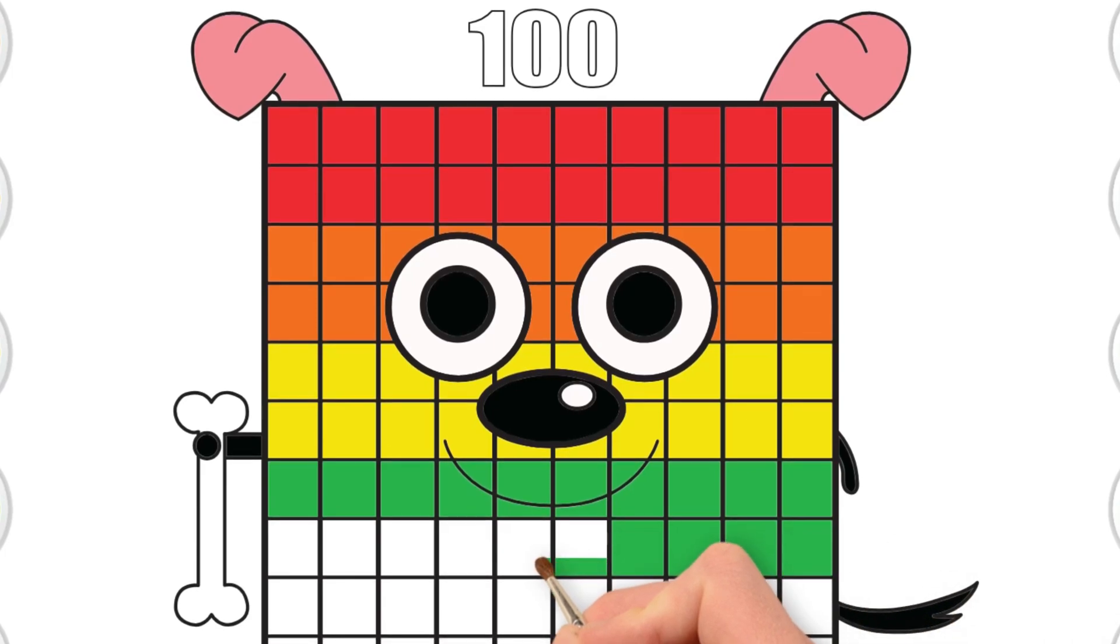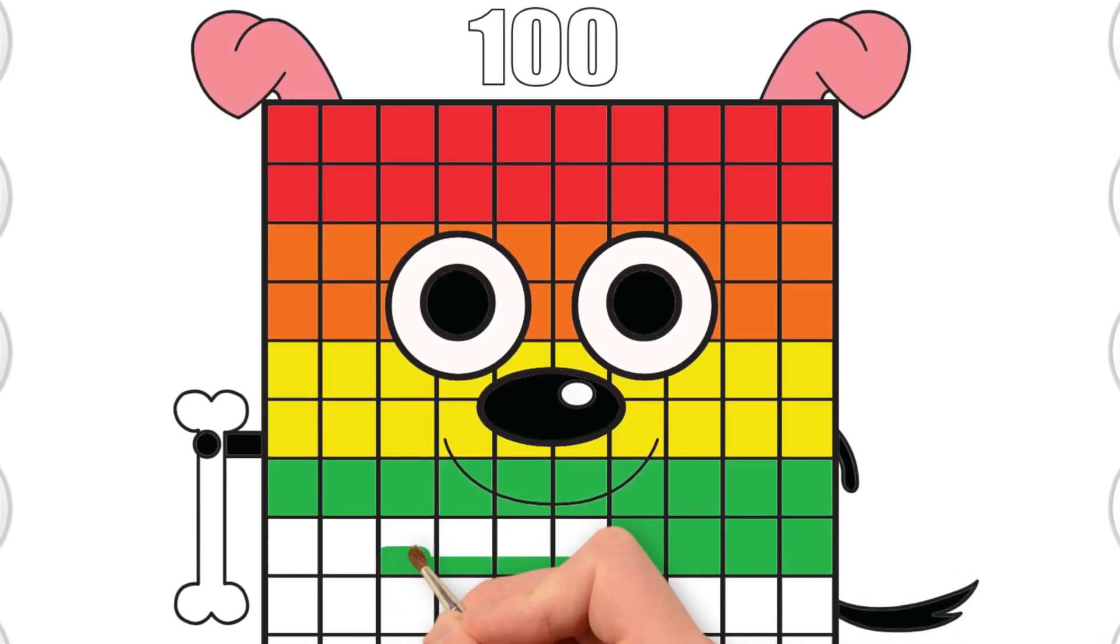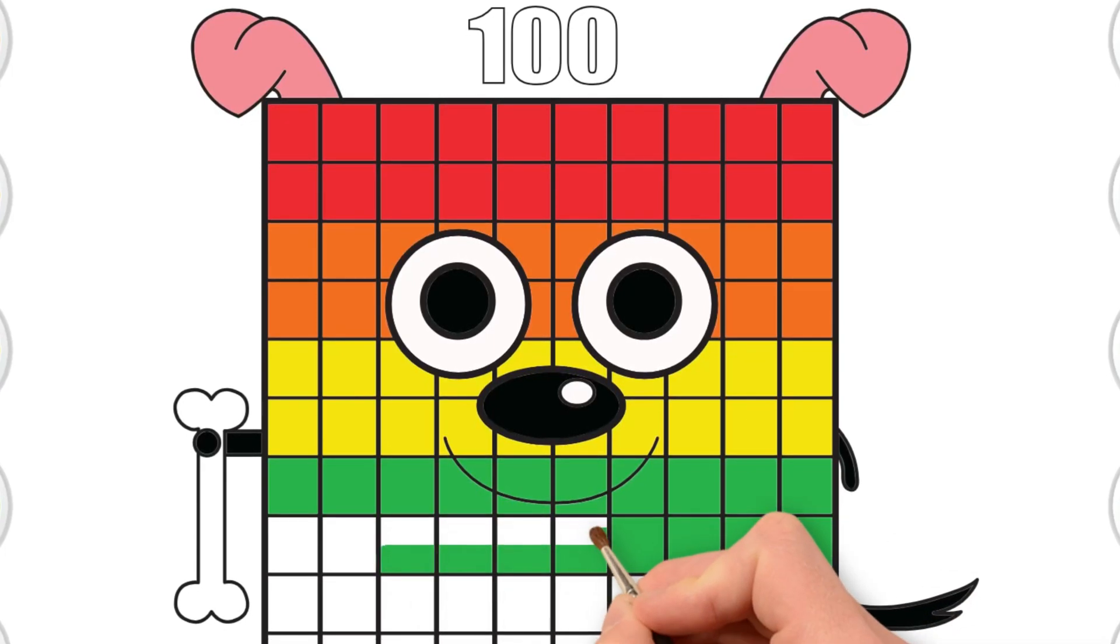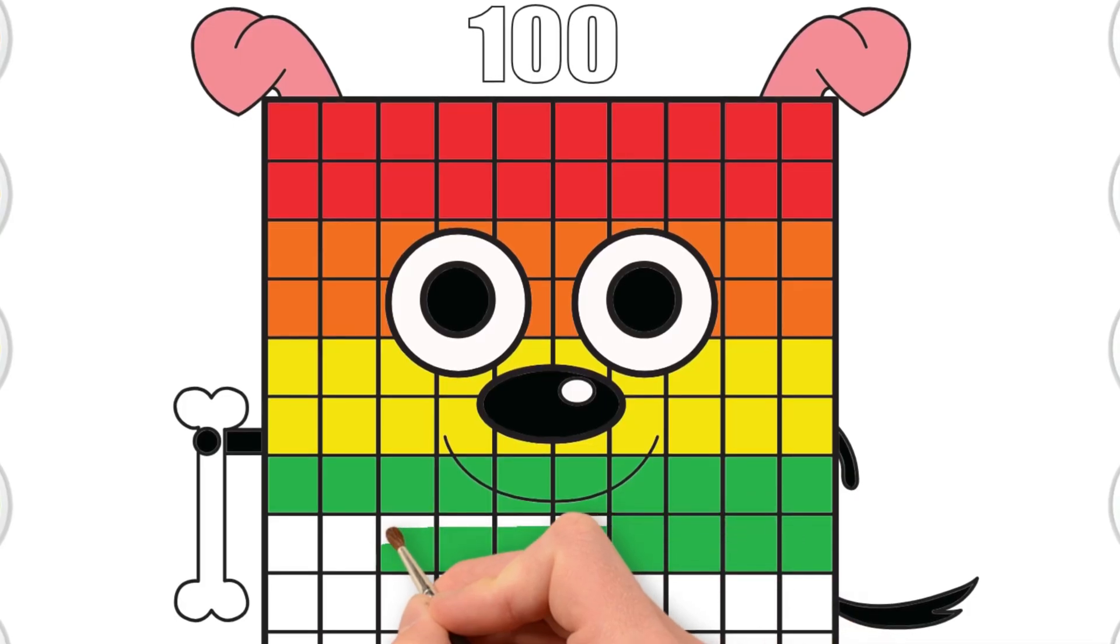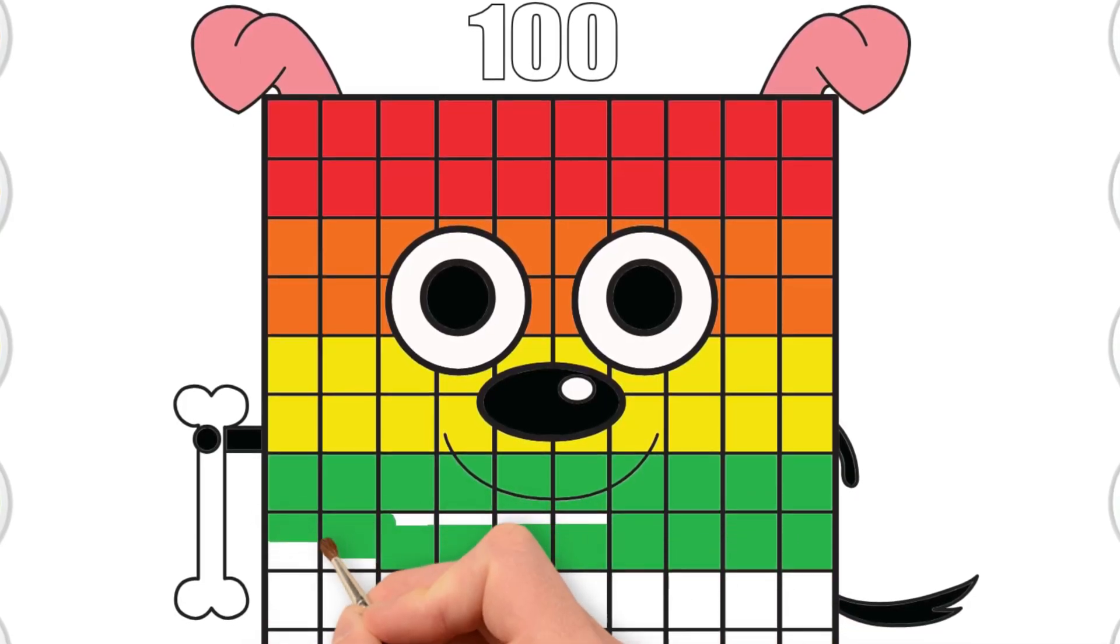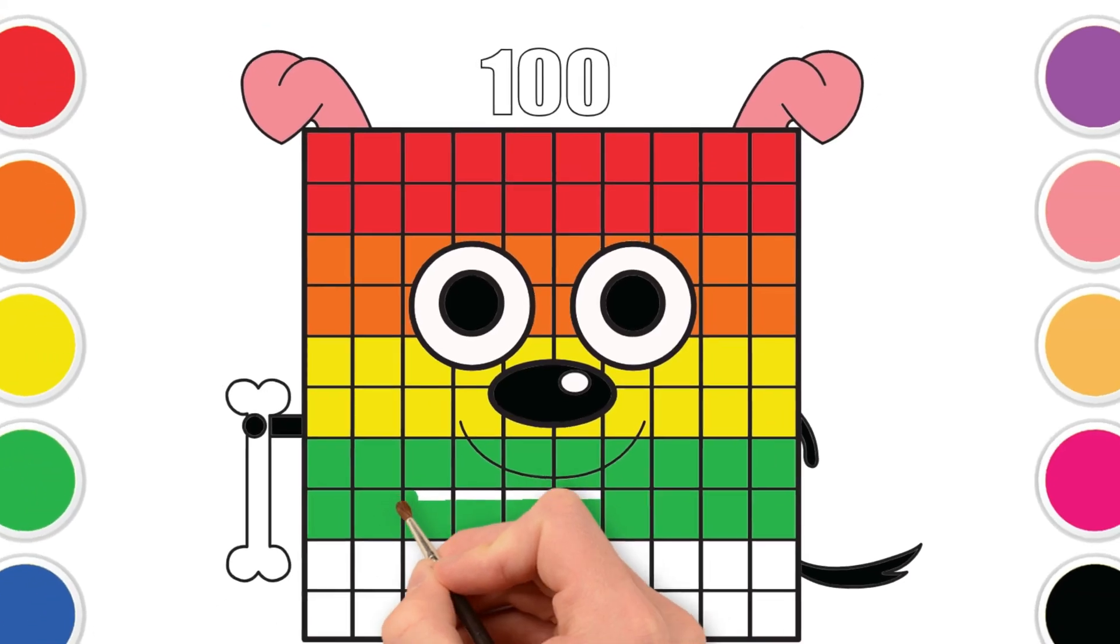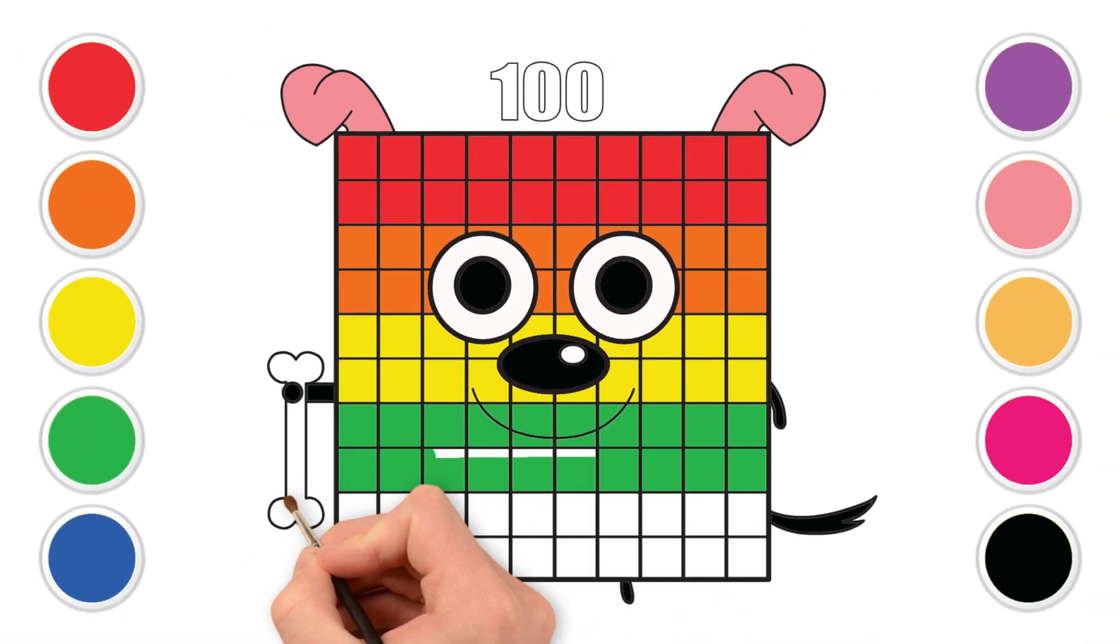Count all the way by ten. Thirty. Forty. Fifty. Sixty. Seventy. Eighty. Ninety. One hundred.